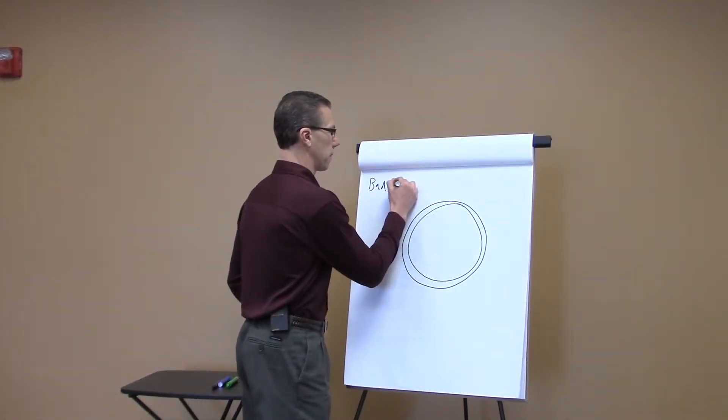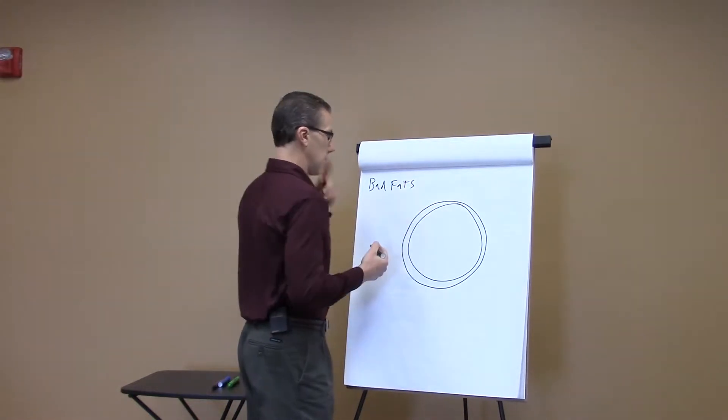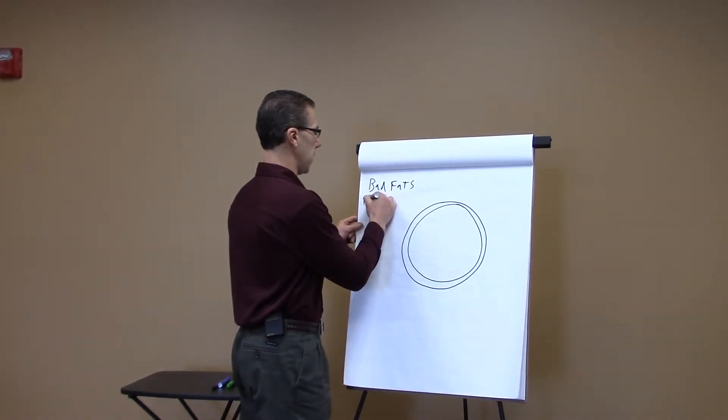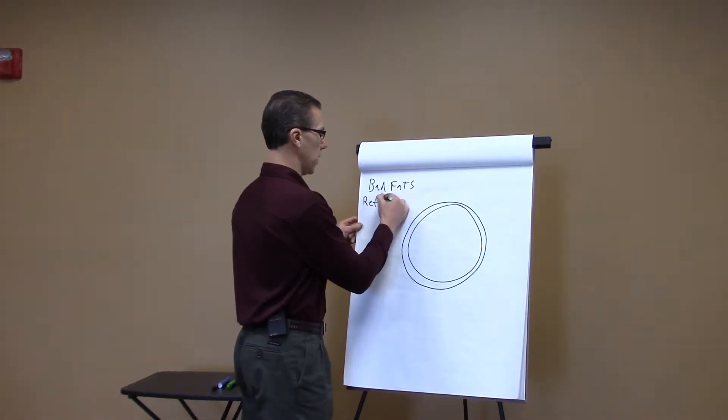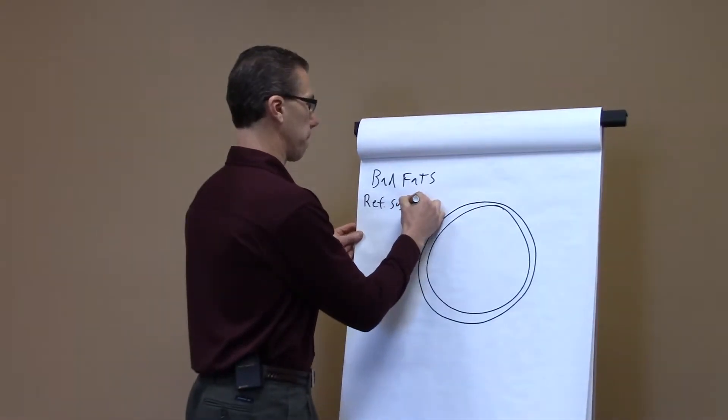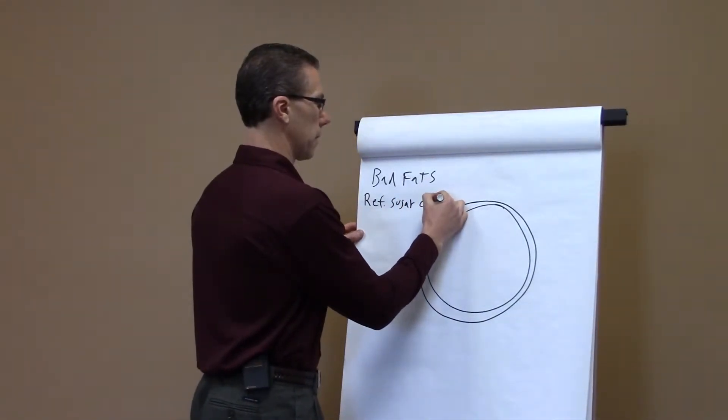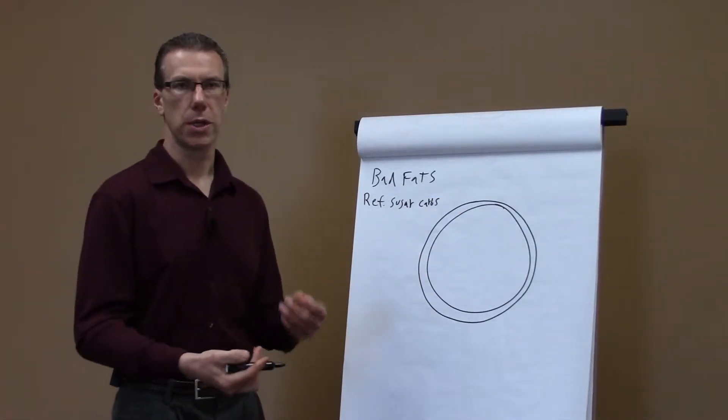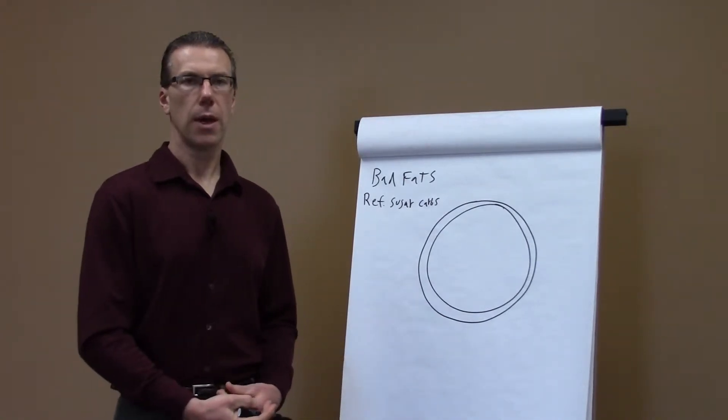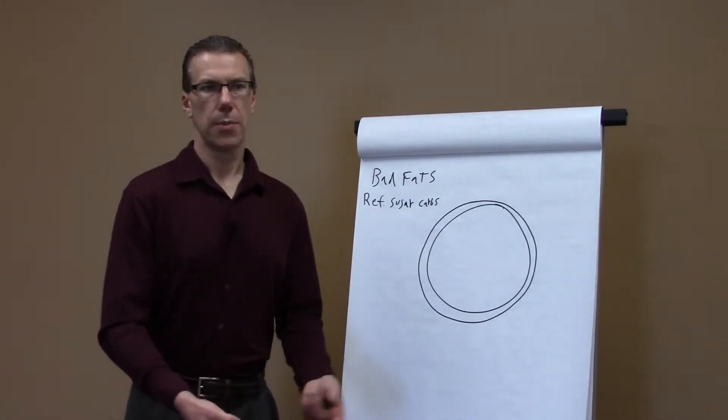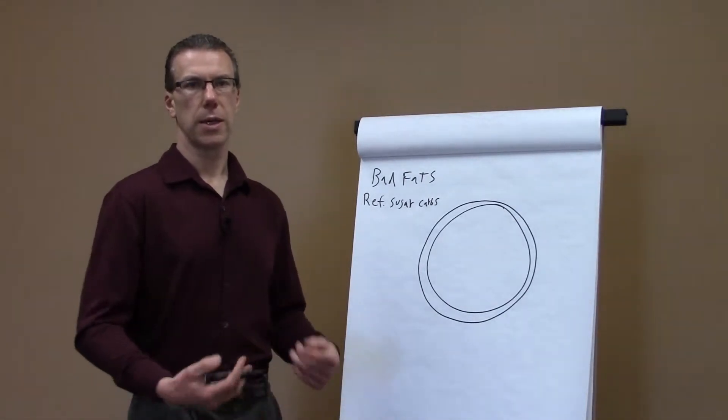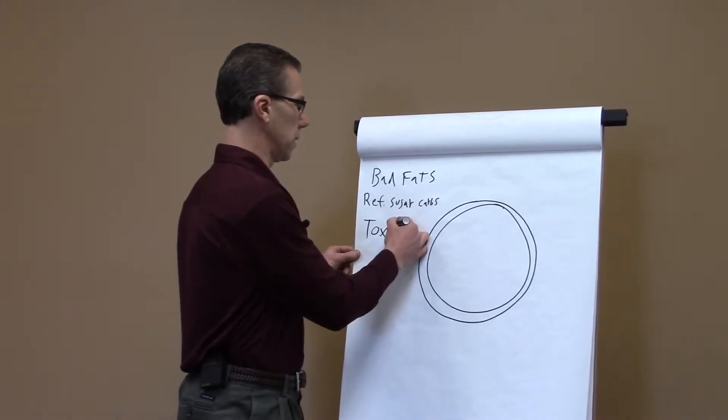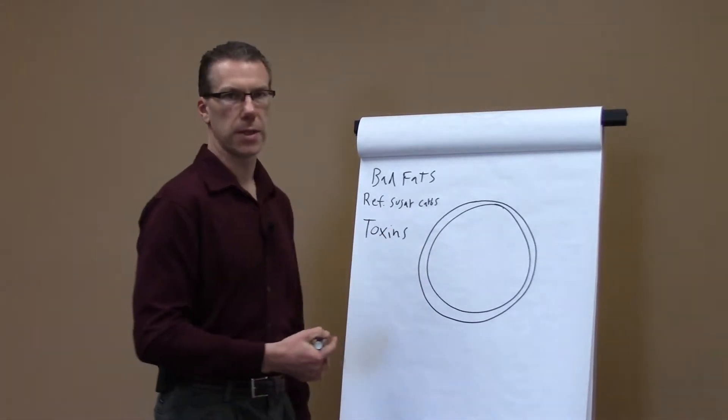Bad fats, and another thing that could be affecting the cell as far as inflammation, is refined or white refined sugar and carbohydrates. So those are refined grains where they've taken out the nutrition out of the grains so that it has a long shelf life, and when that happens the body doesn't recognize it as real food, so it's actually going to suck nutrition out of you. And then toxicity could be another factor that affects this cell.